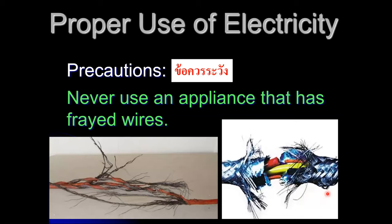Let's proceed to proper use of electricity. Electricity can be very dangerous if not used properly. A fire can break out if electrical wires or appliances become overheated. Here are some precautions that must be followed while using electricity.